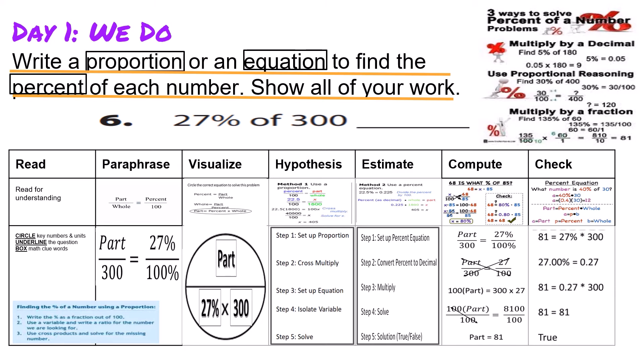To check our work, we multiply 27 percent times 300. We convert 27 percent into 0.27 by putting it in decimal form. We multiply 300 times 0.27, which equals 81. Our proportion is true and our answer is correct.